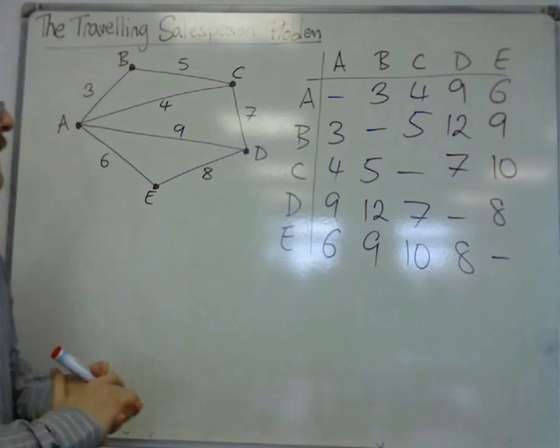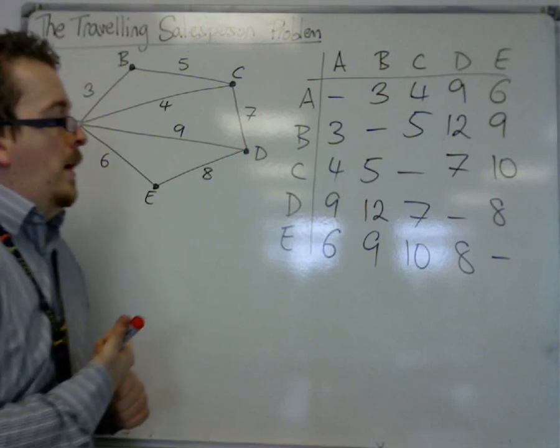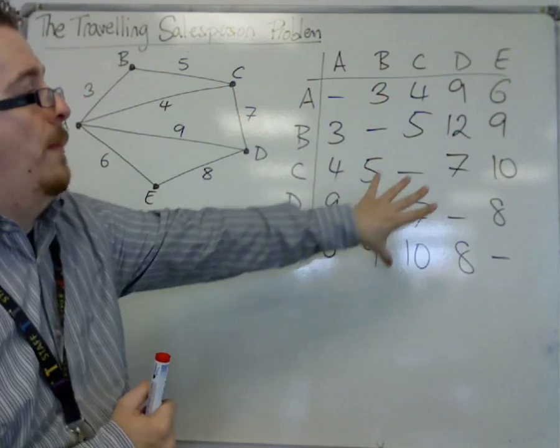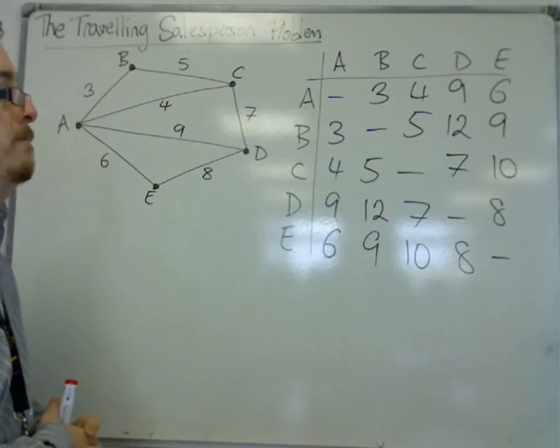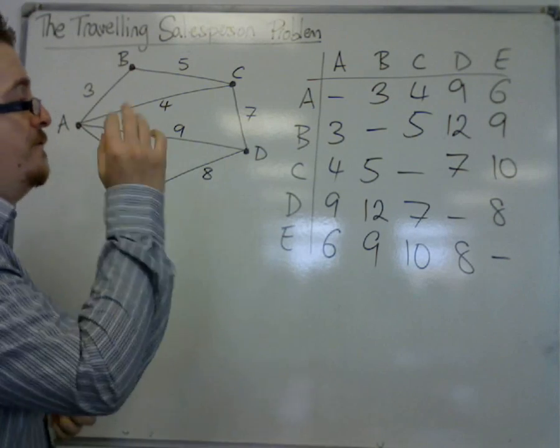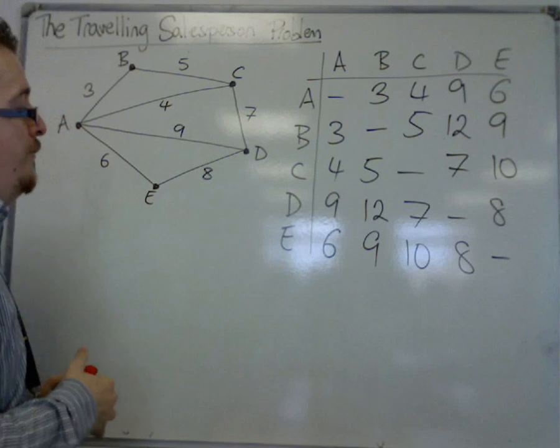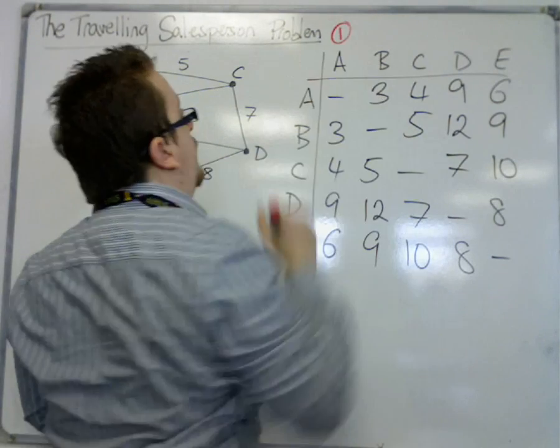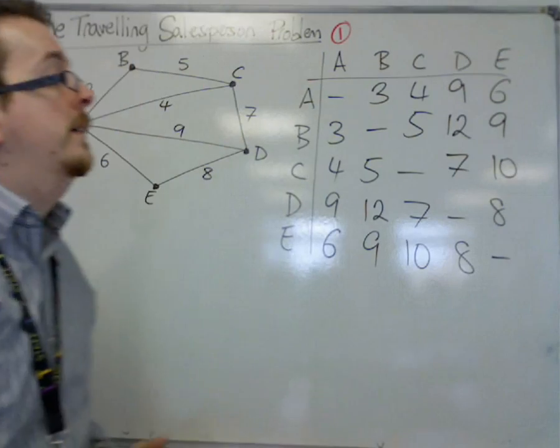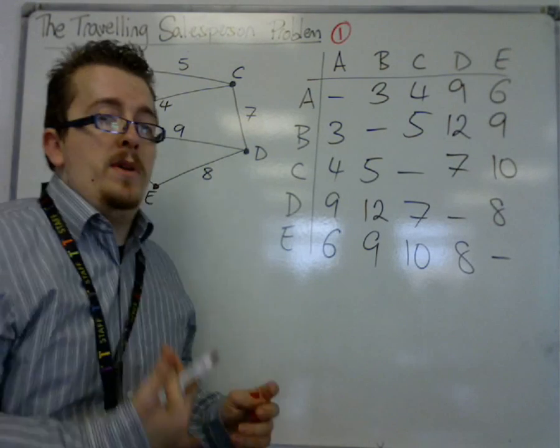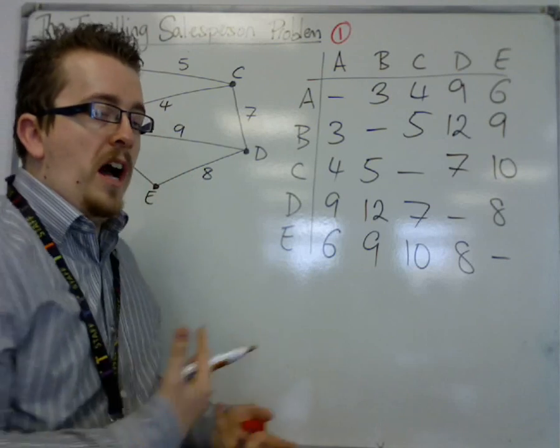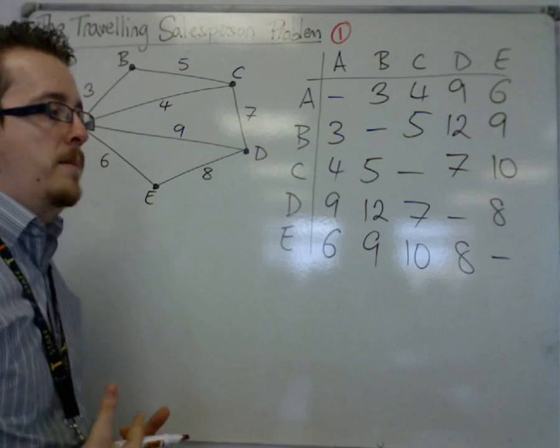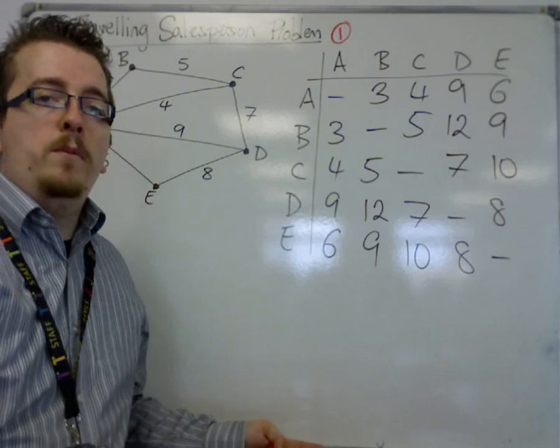So in this case, how it works is that you can do it with actually drawing something on this matrix much like Prims. Much like Prims with a matrix, it works in a very similar way. Effectively how it begins is that you start at a vertex and you would be told which. So depending on where you start you can get different upper bounds.